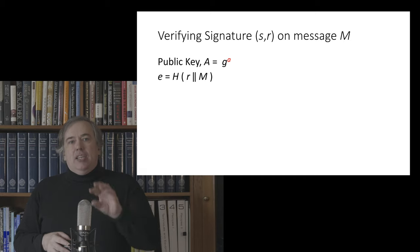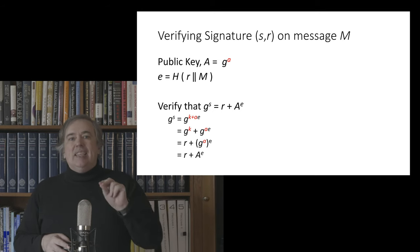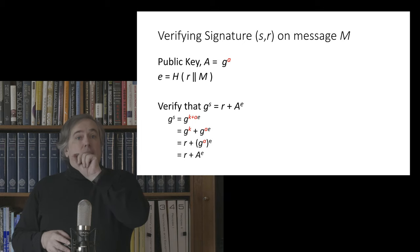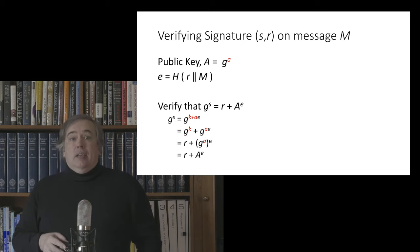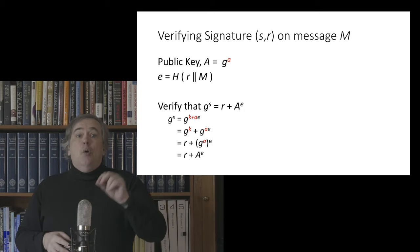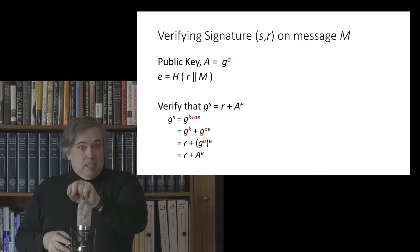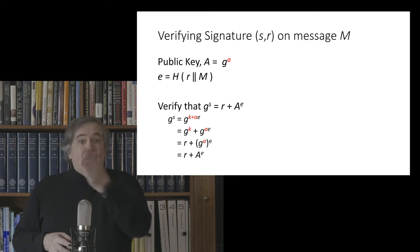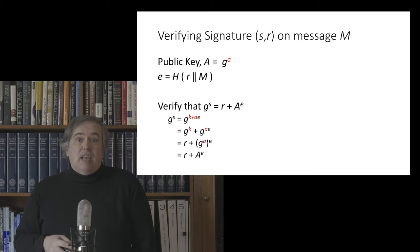And then they're going to calculate two factors and check that they're the same. First of those factors is g to the power s, and second is r plus the public key to the power e. And we can see that these two values should be the same provided that the value s equals k plus a times e, by substituting the terms. So let's start off: g to the power s is going to be g to the power k plus a times e, which is g to the power k plus g to the power a times e, which is r plus Alice's public key to the power e, which is exactly what we told Bob, Carol, and whatever to calculate.